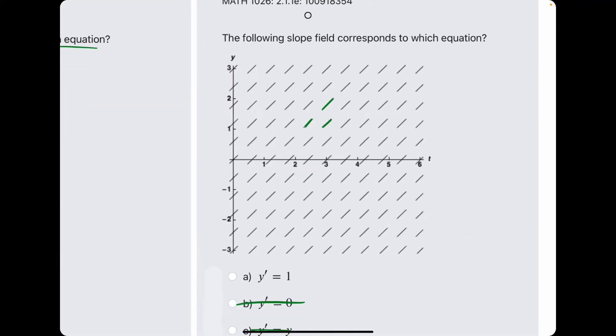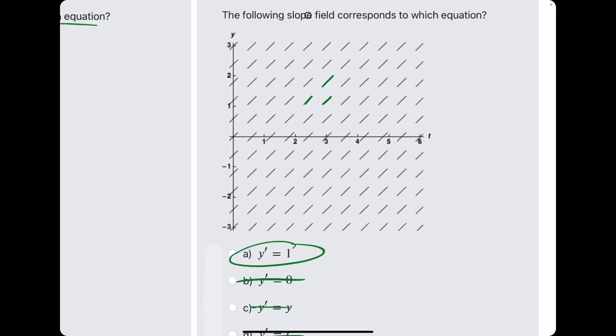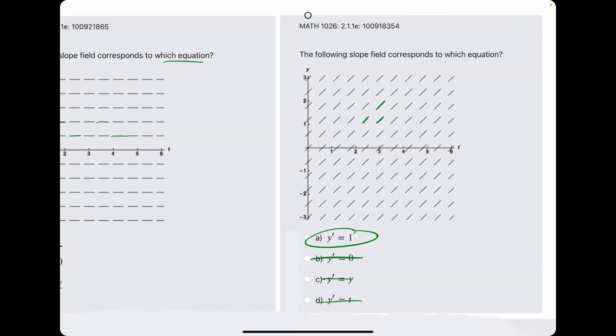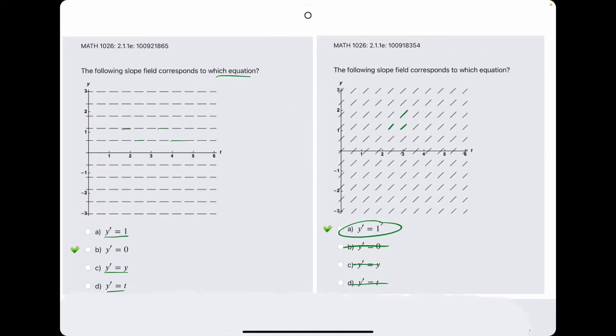and we eliminate y and t because these tick marks aren't changing slope depending on what y and t are. Instead, they're all the same value. And so that positive slope value for all these tick marks must be 1. So all these little dashed lines have a slope of 1. That's why A is our answer.